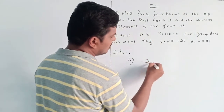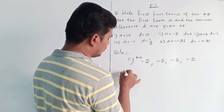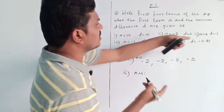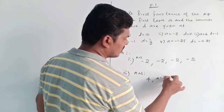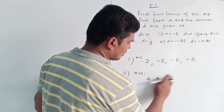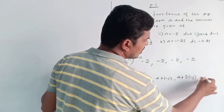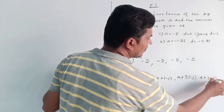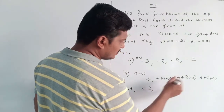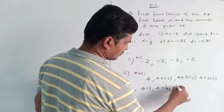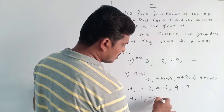For the next problem, the first term is -1 and the common difference is -2. The sequence comes out as: -1, -1 plus (-2) gives -3, then -3 plus (-2) gives -5, and so on. The answer using addition gives us -1, -3, -5, -7 for the four terms.